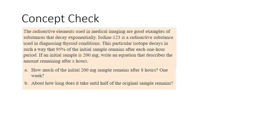So radioactive elements are good examples of objects that exponentially decay. Iodine-123 has a particular isotope that decays in such a way that 95% of the initial sample remains after one hour periods. If you start off with 200 milligrams, how much do you have after x hours? So if we're told that 95% remains, then that means we're going to multiply by 0.95 at each step. The initial amount is 200 milligrams, and then it is going to decay to 95% of the initial sample for every hour x afterwards.